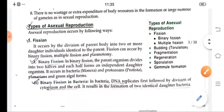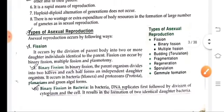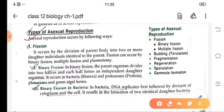Let's move on to types of asexual reproduction. Asexual reproduction occurs by various ways like fission, in fission binary fission is there, multiple fission is there, then budding, fragmentation, regeneration, sporulation, and gemmule formation. What is a fission?